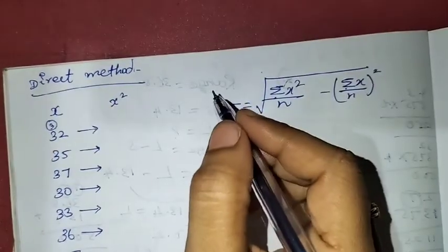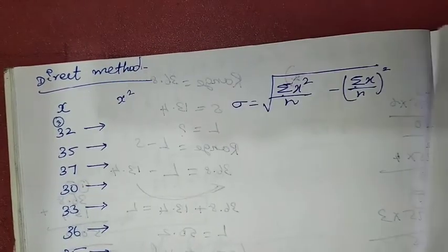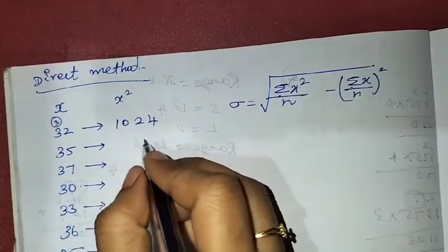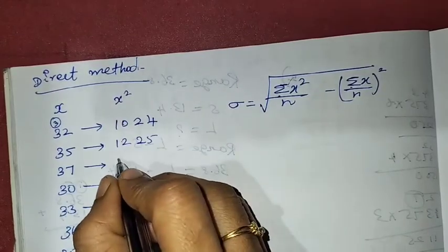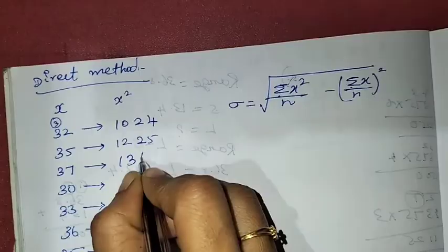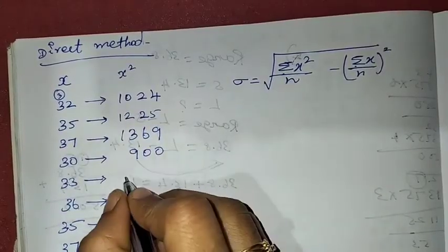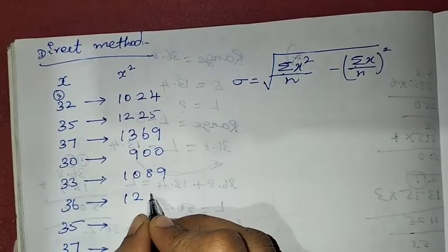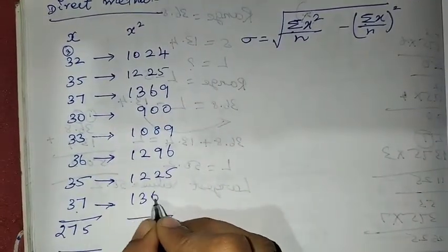Now let's multiply each value squared. 32 × 32 is 1,024. 35 × 35 is 1,225. 37 × 37 is 1,369. 30 × 30 is 900. 33 × 33 is 1,089. 36 × 36 is 1,296. 35 × 35 is 1,225. 37 × 37 is 1,369.